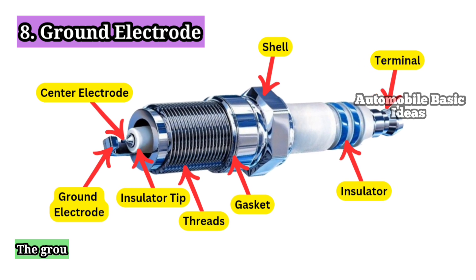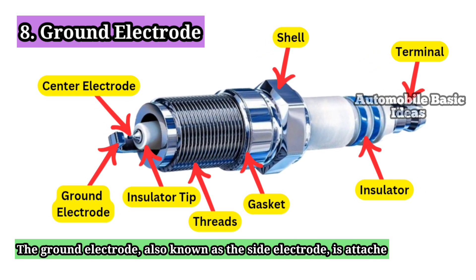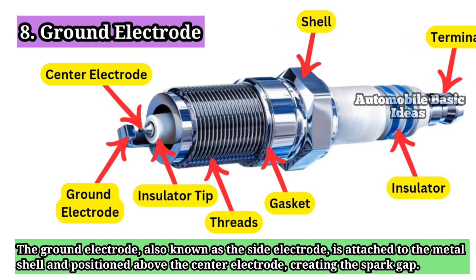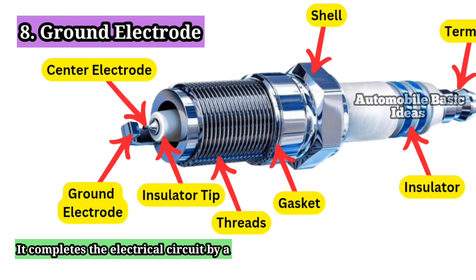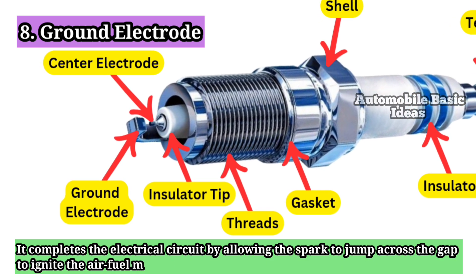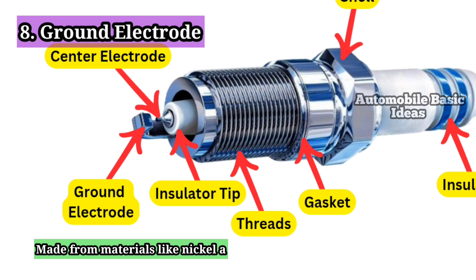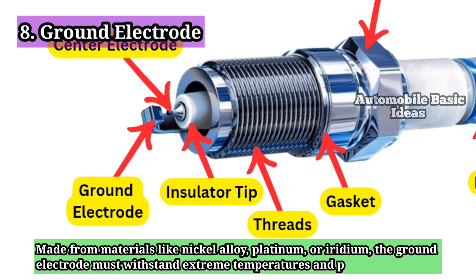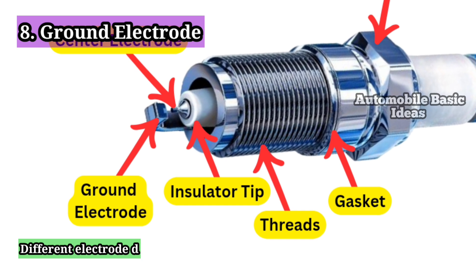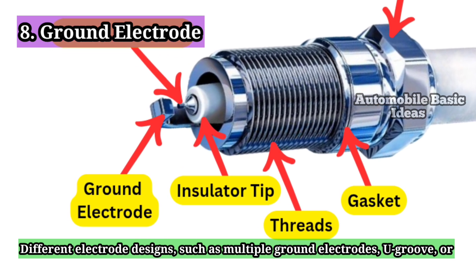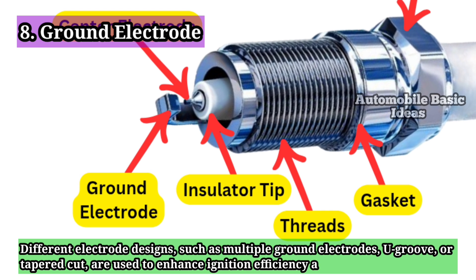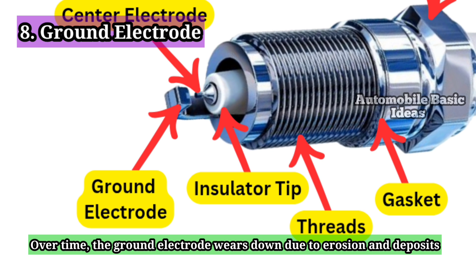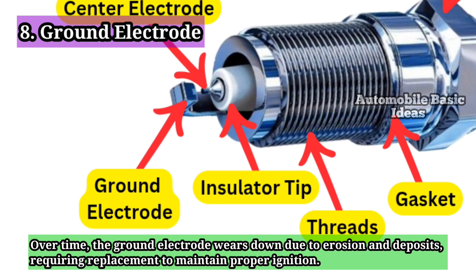8. Ground Electrode. The ground electrode, also known as the side electrode, is attached to the metal shell and positioned above the center electrode, creating the spark gap. It completes the electrical circuit by allowing the spark to jump across the gap to ignite the air-fuel mixture. Made from materials like nickel alloy, platinum, or iridium, the ground electrode must withstand extreme temperatures and pressures. Different electrode designs, such as multiple ground electrodes, U-groove, or tapered cut, are used to enhance ignition efficiency and longevity. Over time, the ground electrode wears down due to erosion and deposits, requiring replacement to maintain proper ignition.